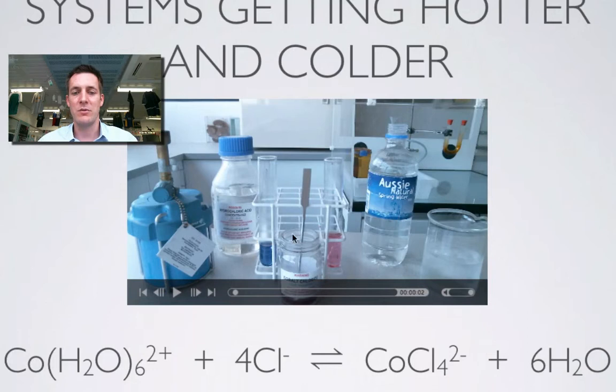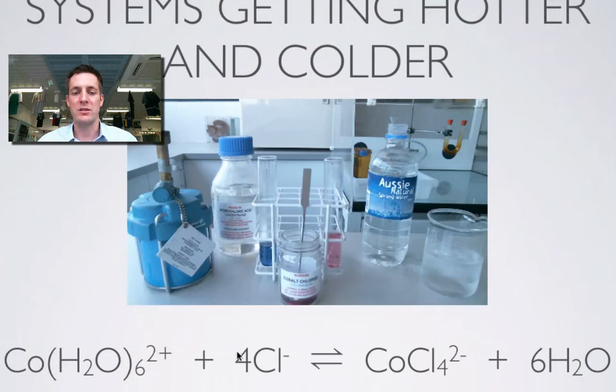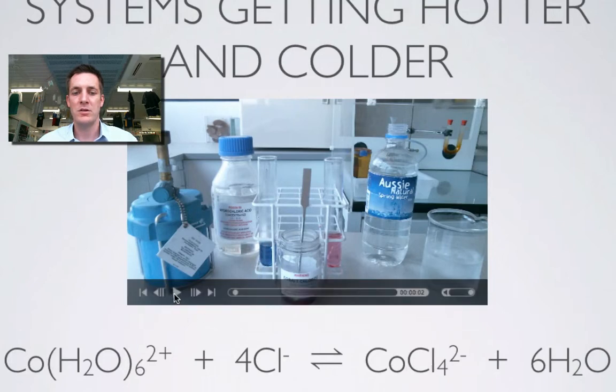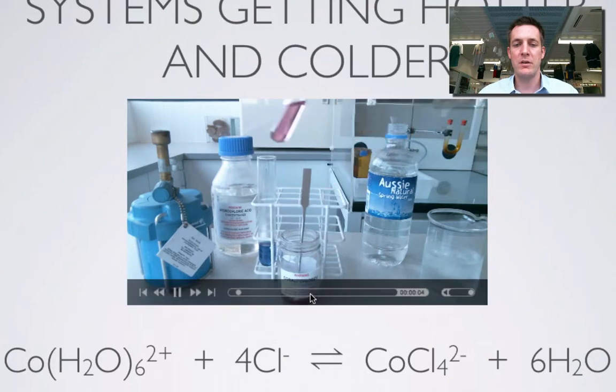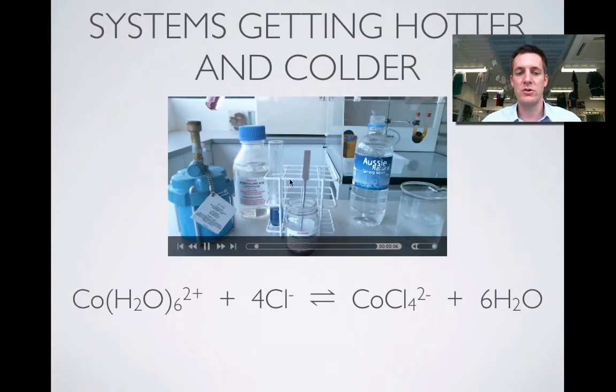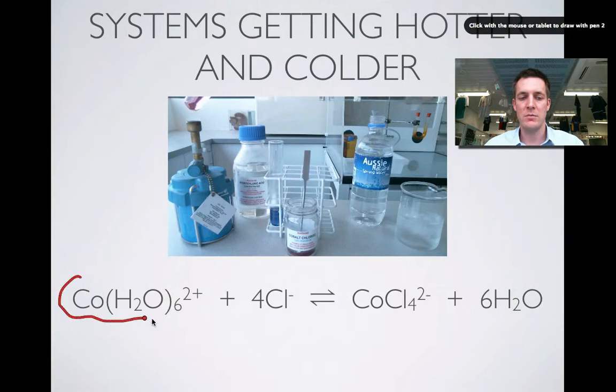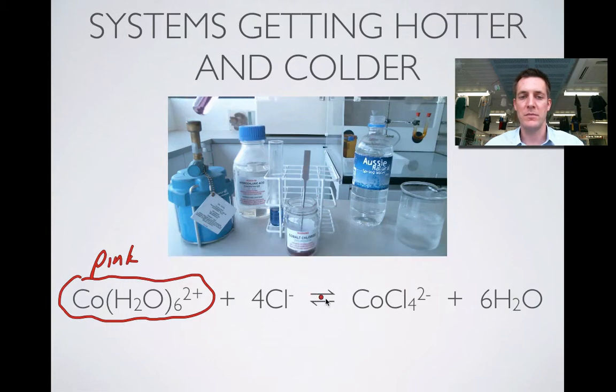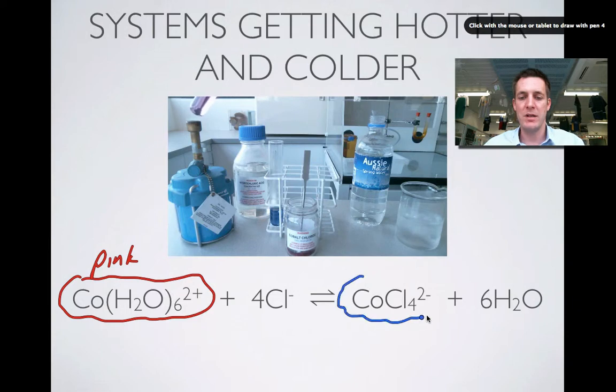In other words, this system can go forwards or back. We might be able to remember that this side here is pink and this side here is blue. Unfortunately, the way it's shown in this picture to start with is the other way around, but you can see I've put the hydrochloric acid bottle on the blue side and the water bottle on the pink side to show that when there's lots of water in the complex ion we're pink, when there's lots of chloride ions in the complex ion we're blue. Now we're going to take this pink solution, which remember is this one here, the pink ion, and we're heating it up to see what happens.